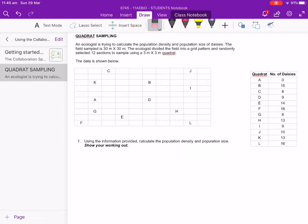So they randomly throw these quadrants down and I've just labelled them A to L in the grid. What they do is they then count the number of daisies in each of those quadrants and that's what this table here is trying to show you - the quadrants and the number of daisies that was in them.